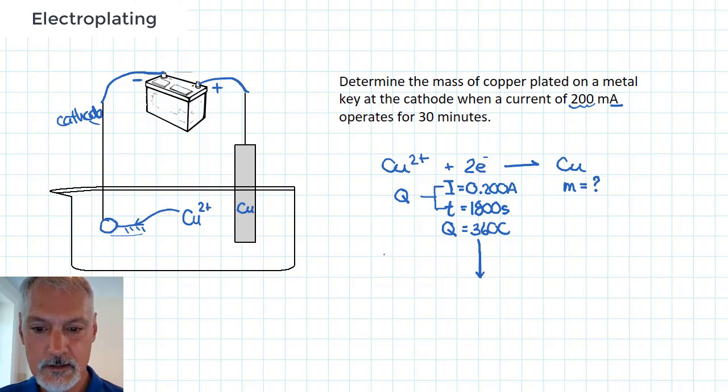And to do that, I divide by Faraday's constant. Faraday's constant is 96,500 coulombs per mole. So that's the symbol left there for Faraday's constant. So when I take the 360 and divide by that, I now arrive at 0.00373 moles of electrons.